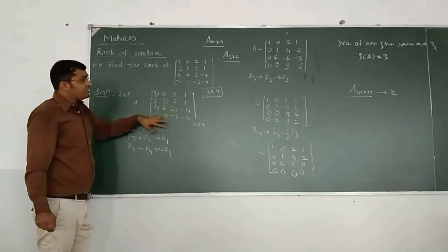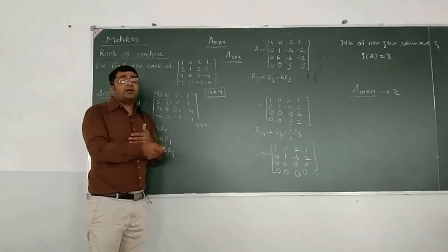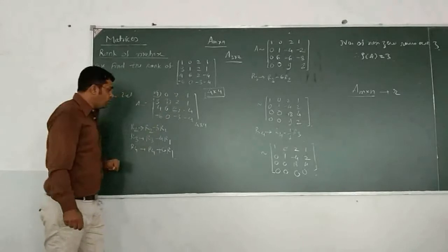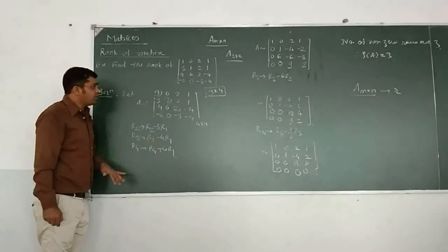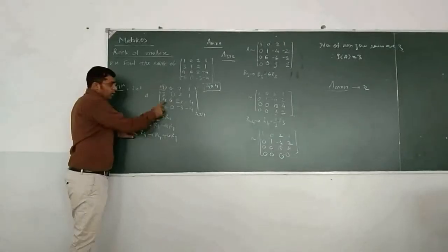After getting that upper triangular, we count the number of non-zero rows, and that will give the rank of matrix. Now we will see how. I apply here the operation. That is, R2 changes to R2 minus 3 times R1. I got the 0 here.